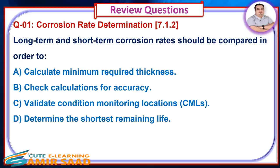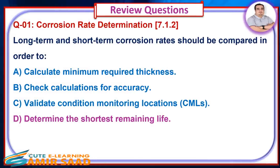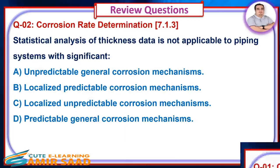Review Question 1: Long-term and short-term corrosion rates should be compared in order to — Answer is D. Review Question 2: Statistical analysis of thickness data is not applicable to piping systems with significant — Answer is C.